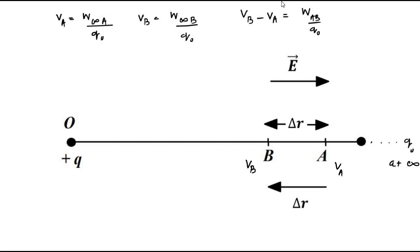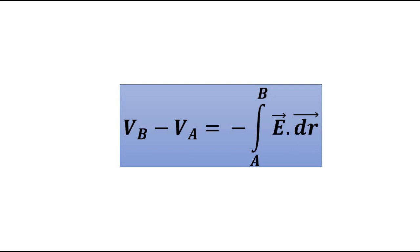Let us say A and B are separated by a very small distance dR, so the displacement is from A to B. The displacement vector is from right to left, but the electric field vector is from left to right. So the electric field vector and the displacement vector are in opposite directions. Since these two points A and B are very close to each other, the electric field at B and A will be almost the same. We know that the potential difference between two points is the negative line integral between the electric field vector and the displacement vector.